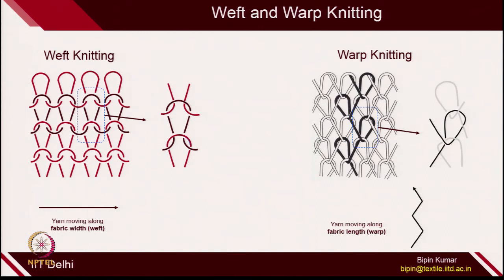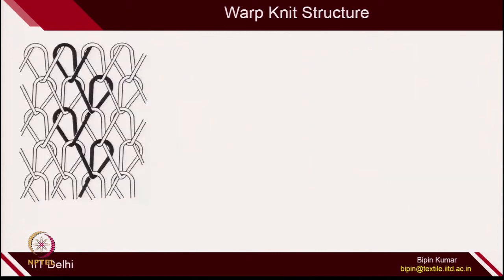The key point for you at this moment is to differentiate these two types of structures. For the next 3 to 4 weeks, we will be focusing mainly on warp knitted structures. Let's try to get more understanding of the loop network in a warp knitted structure. I have many samples of warp knitted fabrics, and before I show you the actual fabric sample, let's first visualize the loop network in a warp knitted structure.